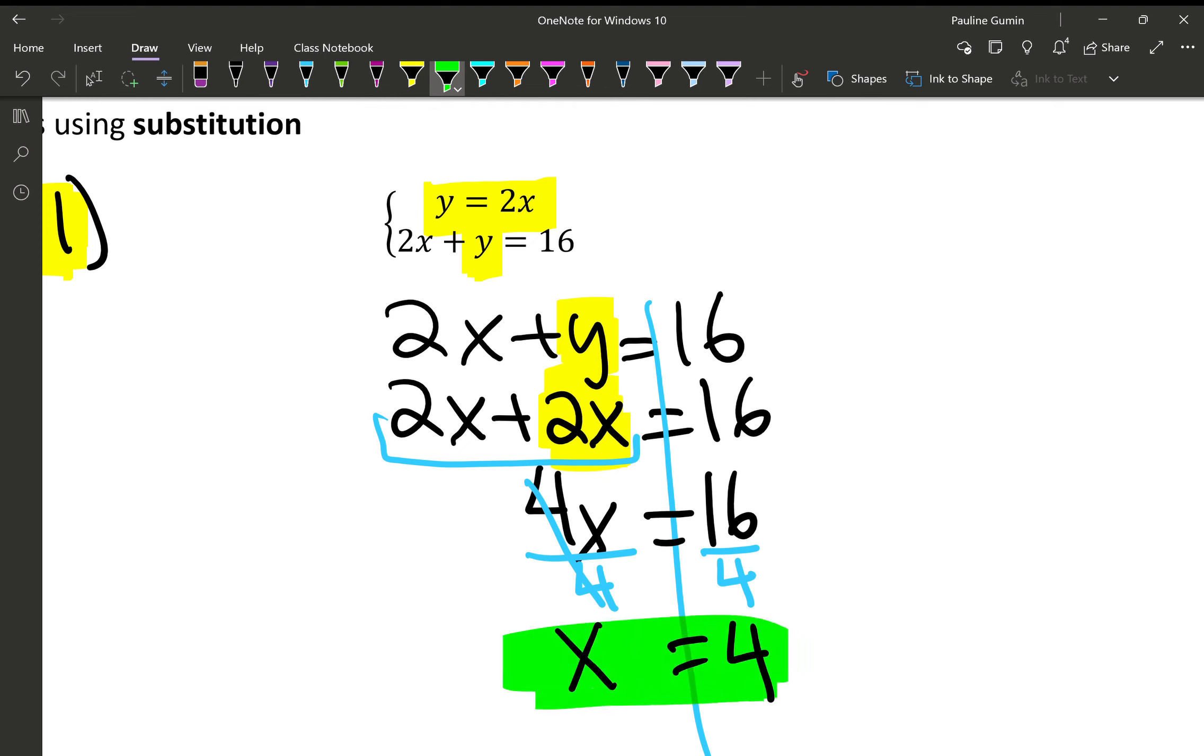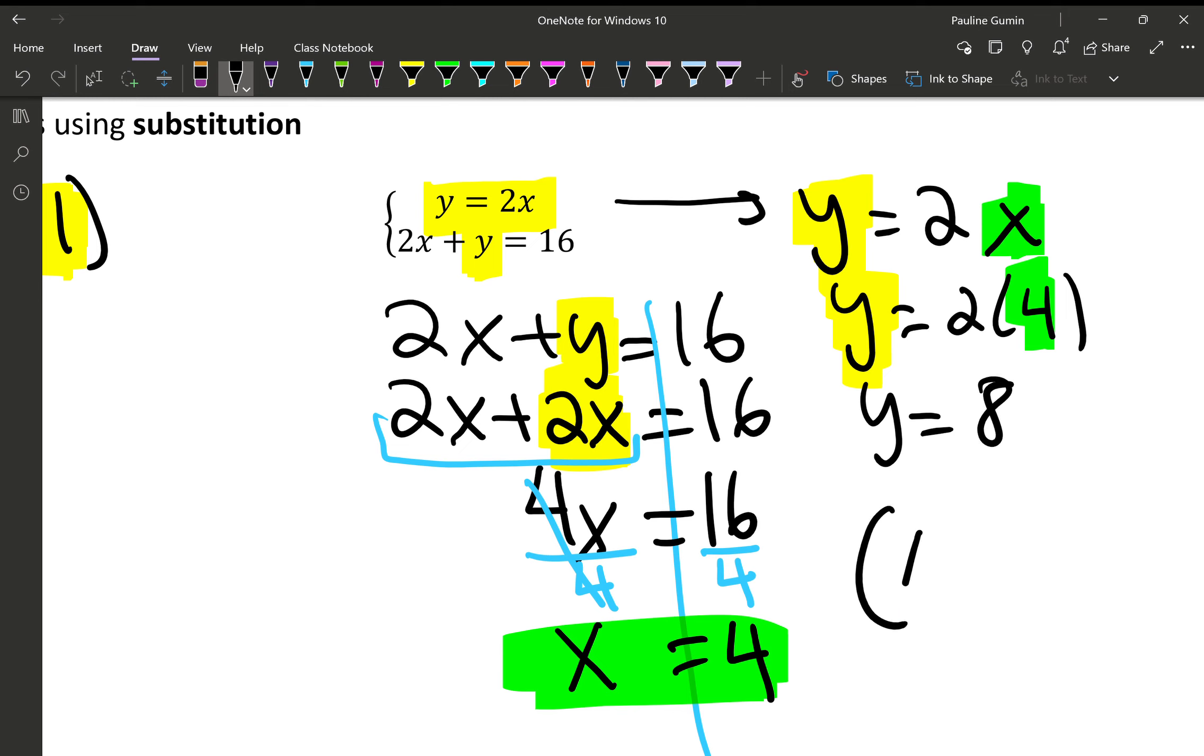x equals 4. Now, unfortunately, we're not done because we don't have y yet. We do know that y equals 2x, which means y equals 2 times 4. 2 times 4 is 8. So our answer is 4, 8.